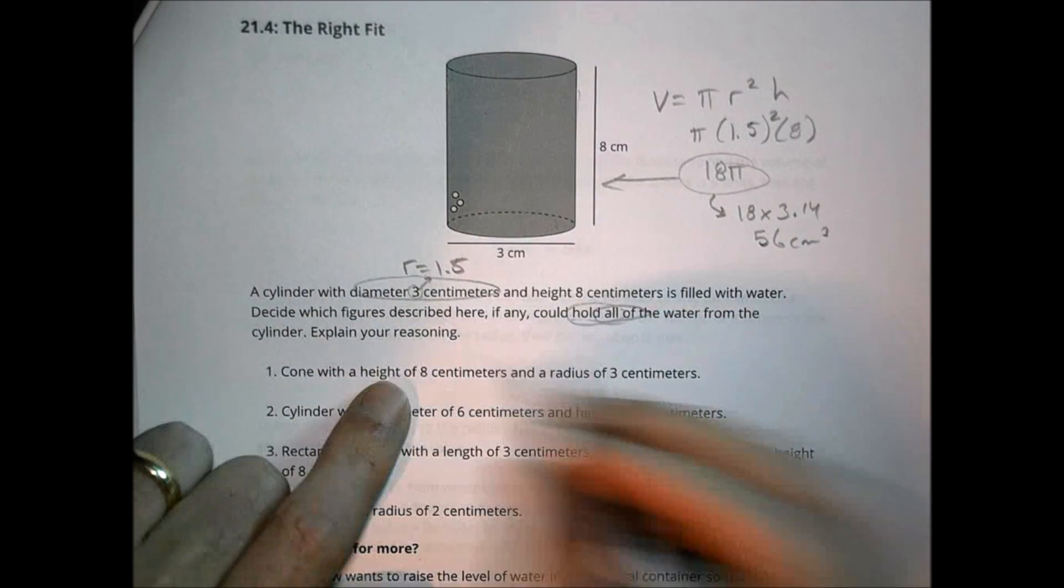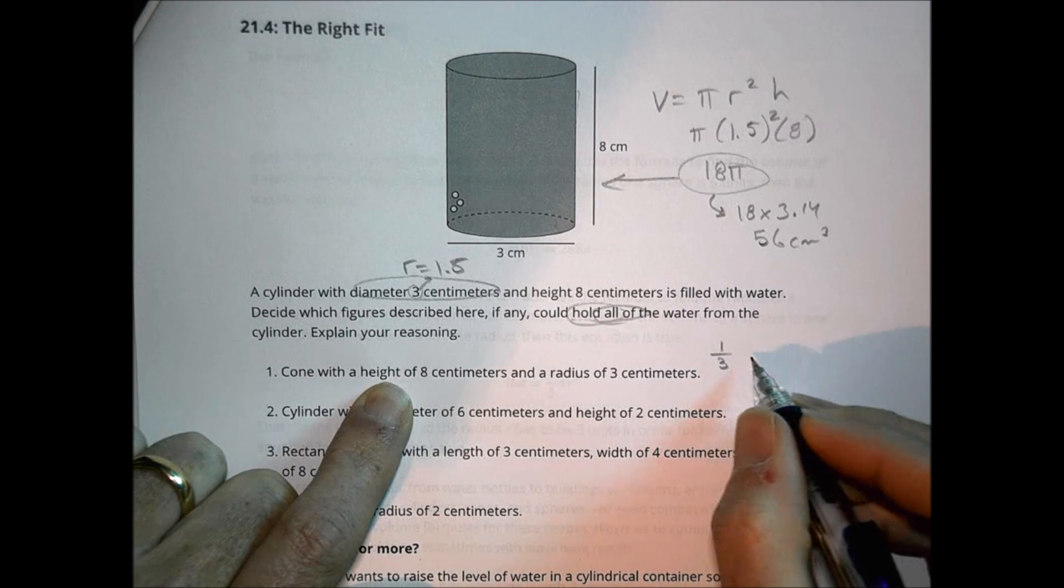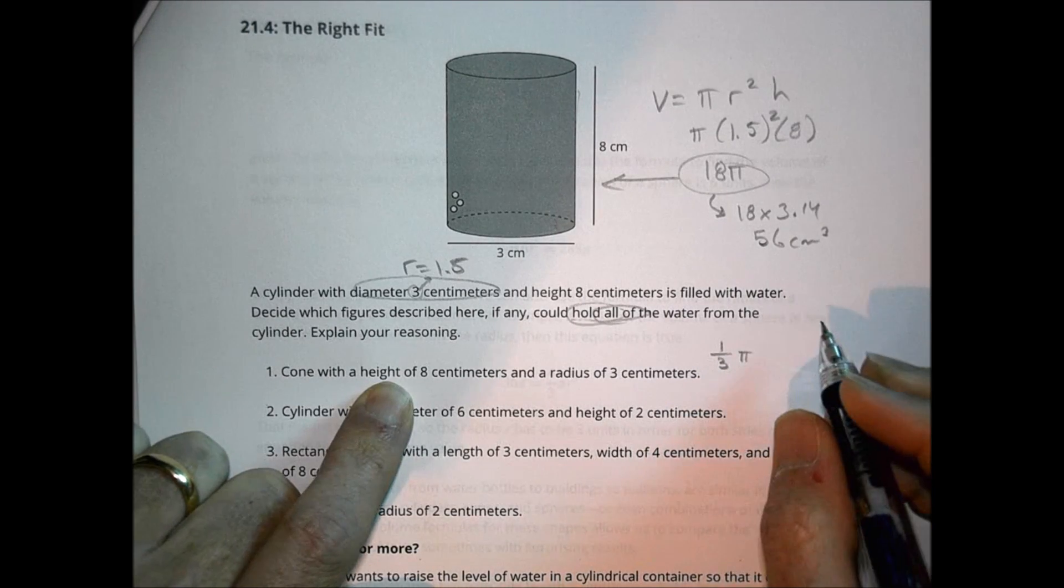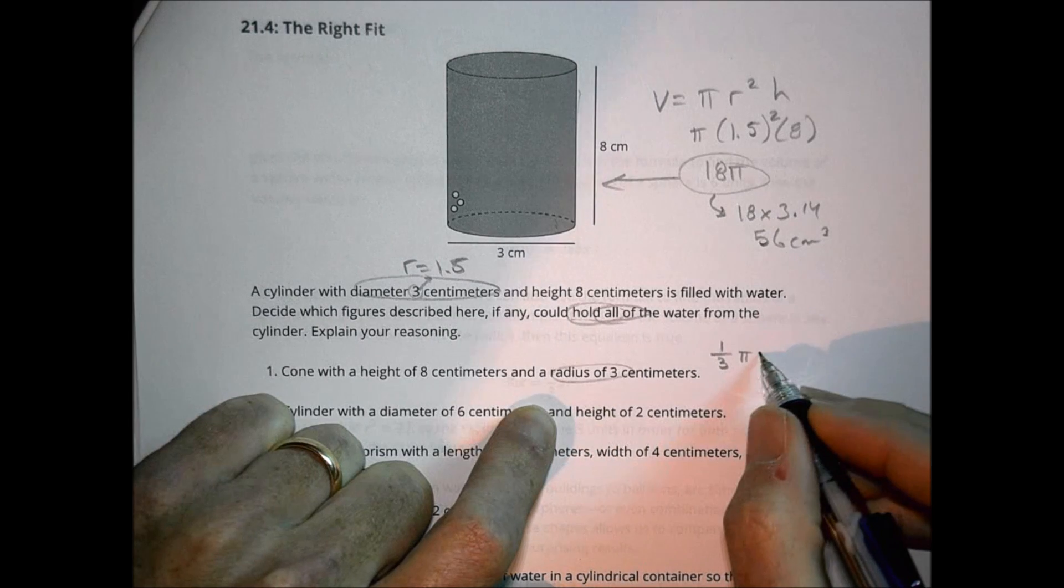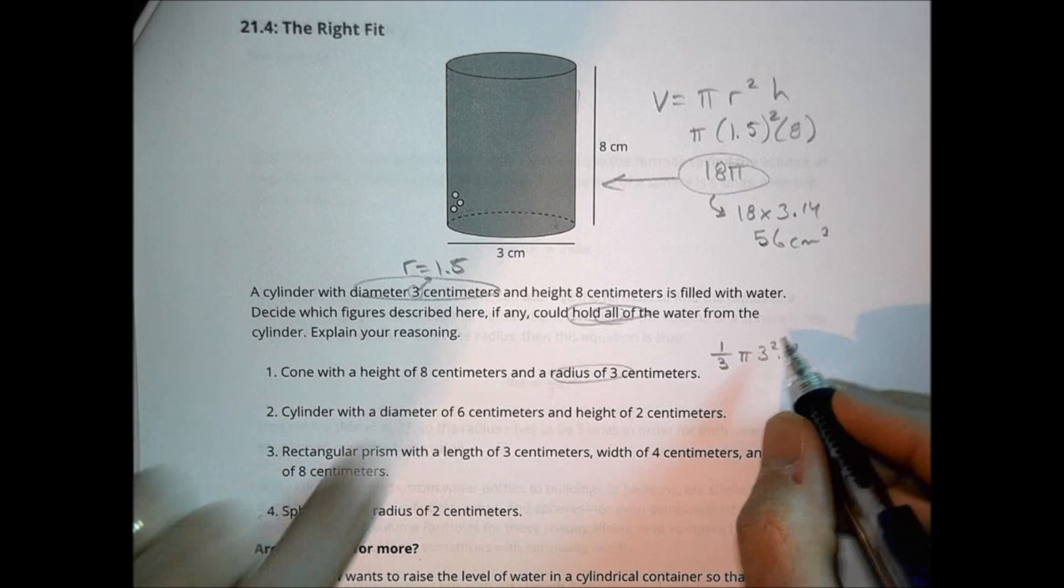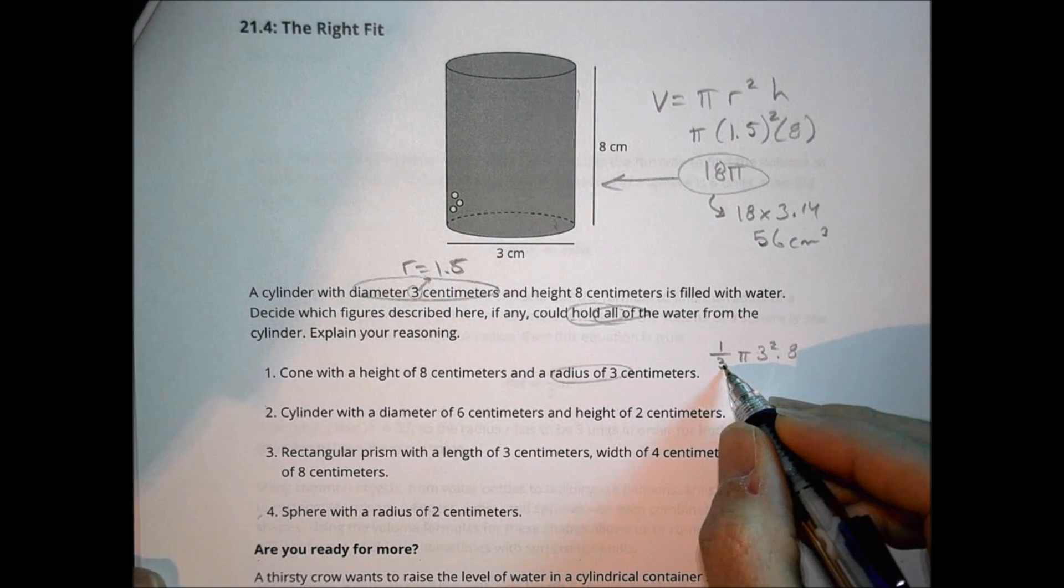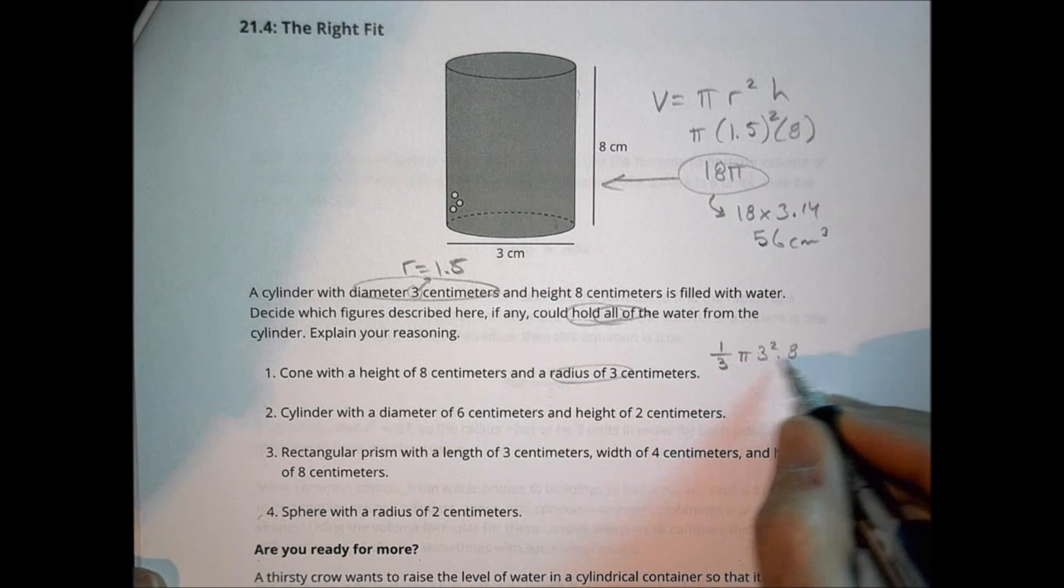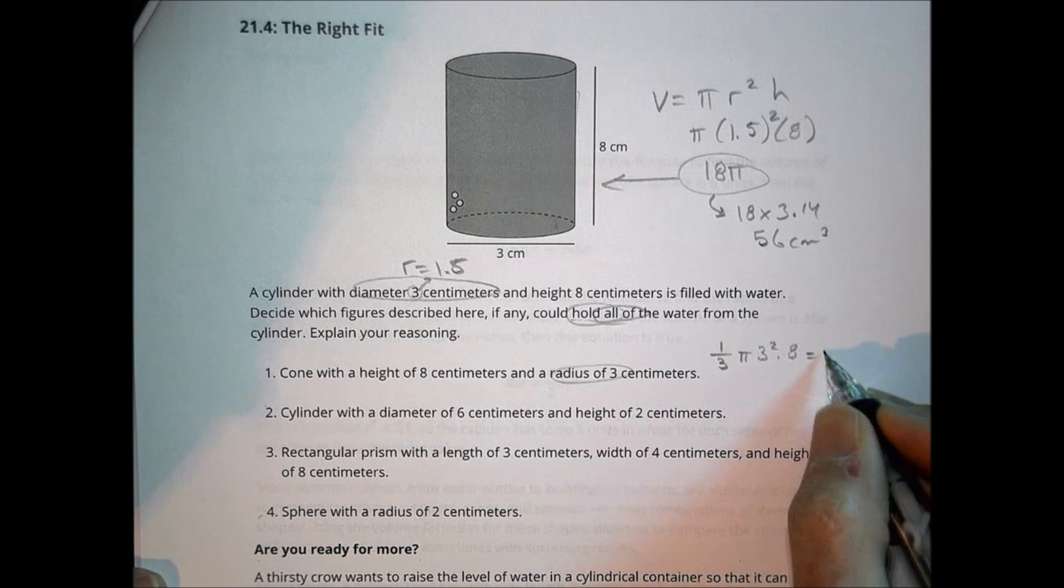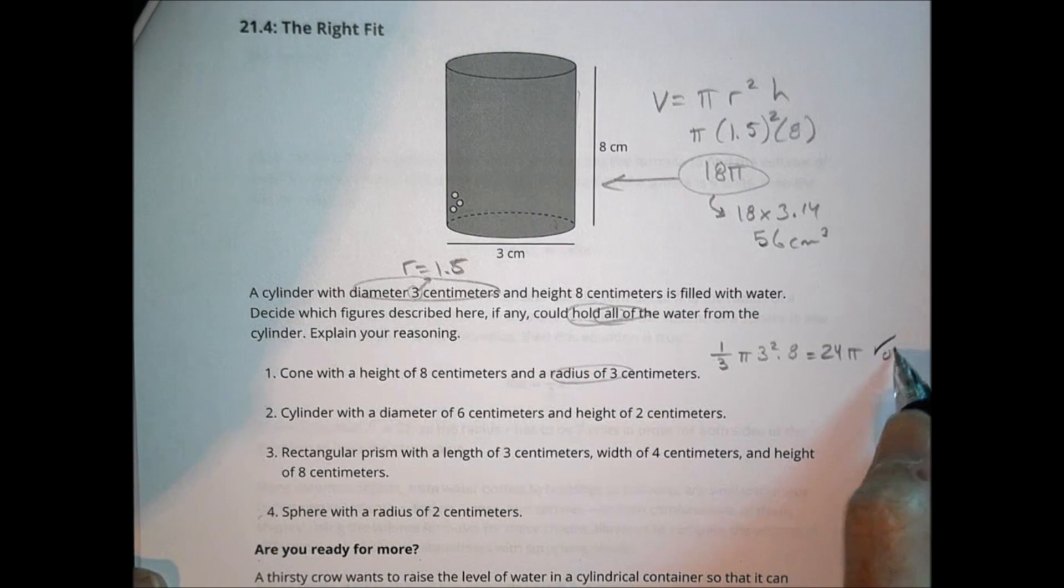Taking a look at the cone, we have a cone with a height of eight. Now a cone's formula is one third times pi times the radius. Here's the radius of three. Three squared times the height of eight. So three squared is nine. Nine divided by three is three and three times eight is 24. So that becomes 24 pi. That's greater than 18. So that's going to be okay.